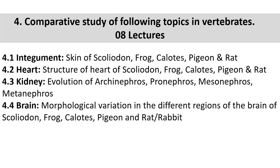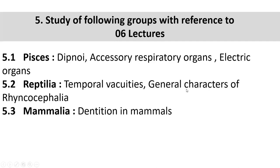The last chapter covers the study of the following groups with special reference to special points. It is having six lectures. For non-chordates like Protozoa, Porifera and Coelenterata, there are special reference points. There is also an animal type for non-chordates and another for chordates. In Pisces, there are special features - particularly the Dipnoi, which are lungfishes.